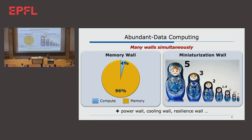That's because you have to worry about what I call abundant data computing — machine learning, AI. This workshop about AGI is an example of abundant data computing. If you look at abundant data computing, there are many walls simultaneously. Professor Mutlu just talked about the memory wall. I have a much simpler picture to make the point that a tremendous amount of energy and execution time are spent trying to access off-chip memory.